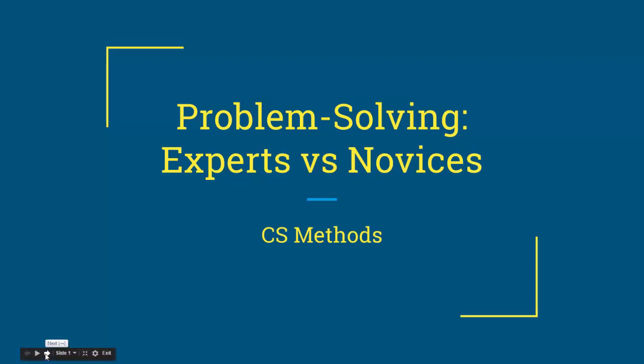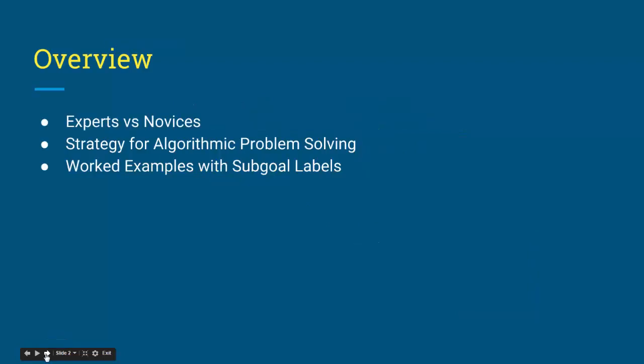Hello. In this presentation I'm going to talk to you a little bit about problem-solving and how that might differ between experts and novices, and a technique for use in computer science to help our novice student programmers become experts. We'll start off by talking about the differences between experts and novices and how that applies to the problem-solving process, as well as a strategy for algorithmic problem-solving: worked examples with sub-goal labels.